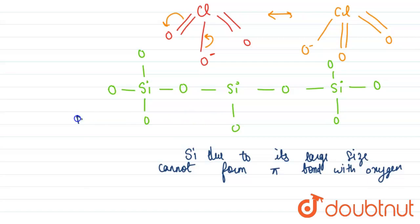So as we can see, there is no double bond, so there is no resonance in SiO2. So our answer will be option number C.